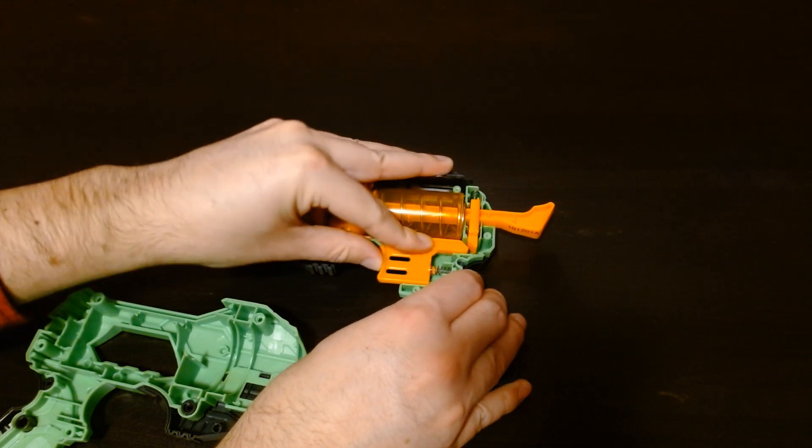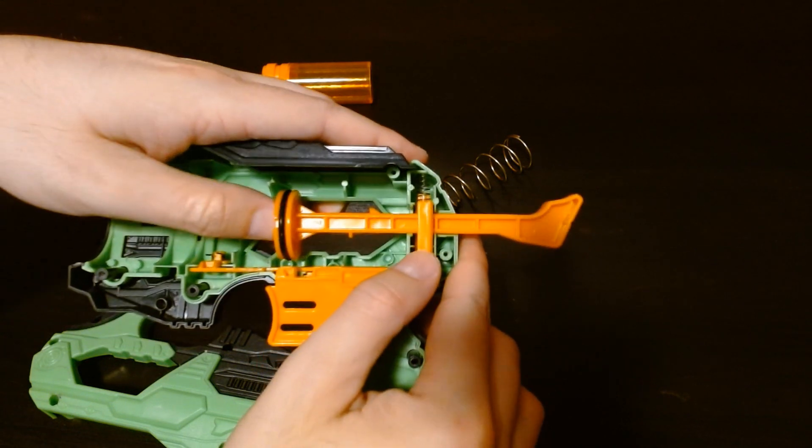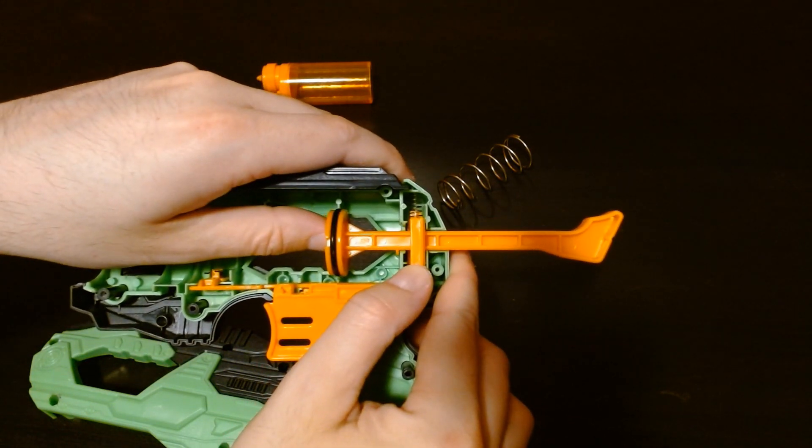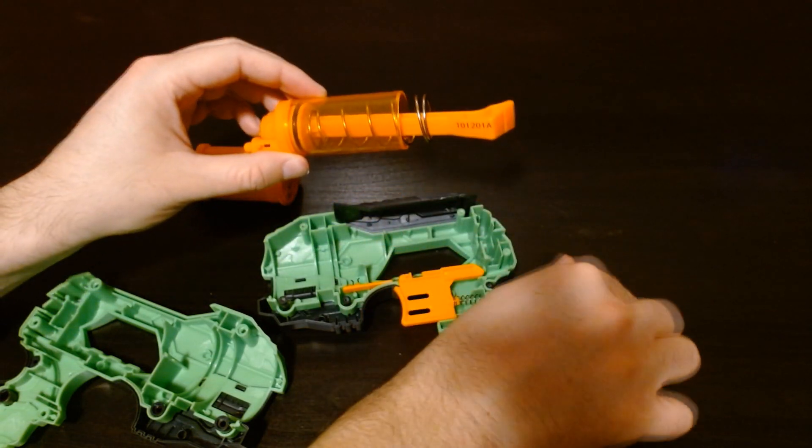A spring at the top of the piston latch forces it down into the latch condition. On the piston rod, there is a lobe or bump that latches to the piston release mechanism. Let's take a look at the piston assembly.